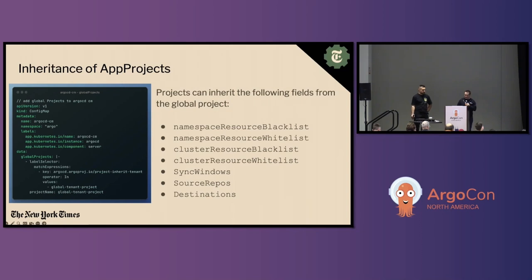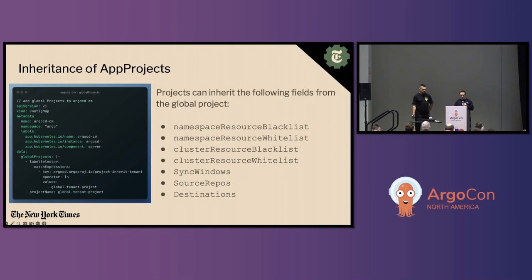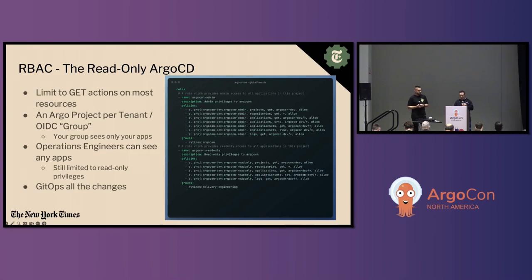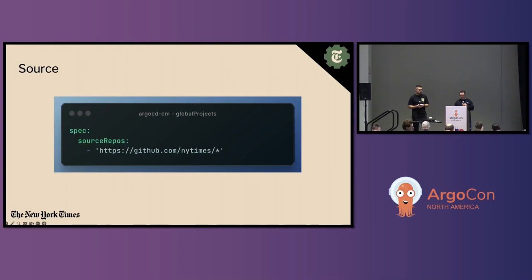Also look at the inheritance of app projects. Our tenants and apps have restricted lists of Kubernetes resources available to them. Rather than repeat this allow list in every project, we utilize the global project properties available in Argo CD — every project is of a tenant type, and this property is then applied. For the read-only Argo CD, ensuring proper auditability and tracking of all changes to environment or application, we enforce that GitOps principles are followed even through Argo CD UI or API access. RBAC policies are designed for every tenant to limit their views to their apps, and their actions are read-only.